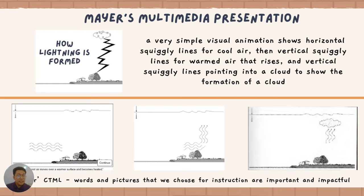Here is an example of Mayer's multimedia presentation of how lightning is formed. On the left image, there is a very simple visual animation showing horizontal squiggly lines that represent cool air. On the center image, there are vertical squiggly lines for warm air that rises. And on the third image, vertical squiggly lines point into the cloud to show the formation of an actual cloud.